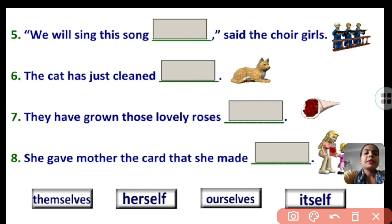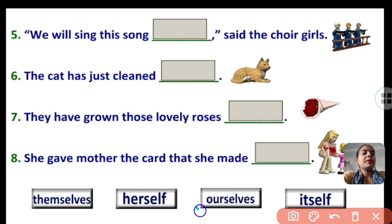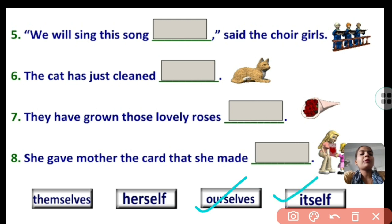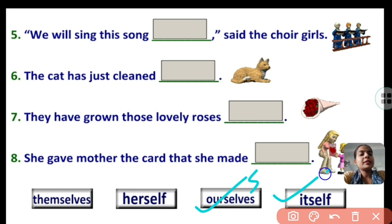We will sing this song. For we, we use ourselves. Ourselves did the chores good. The cat has just cleaned itself — because for animals we use the word it, so itself. And they have grown those lovely roses themselves.